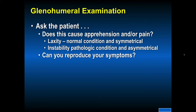Glenohumeral exam. Ask the patient: does this movement cause apprehension or pain? Laxity is a normal condition and is symmetrical. Instability is a pathologic condition and is asymmetrical. Ask the patient if they can reproduce their own symptoms — can they make their shoulder come out of place, as in a voluntary posterior instability seen in some young female athletes?